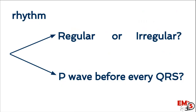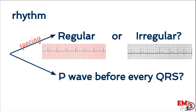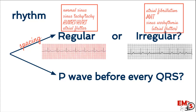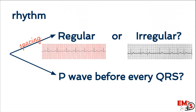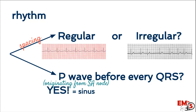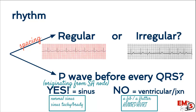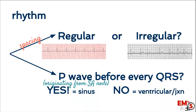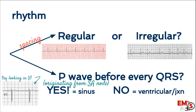Next, we're going to look at rhythm. There are two things to assess. First, ask yourself: is the spacing between the beats regular or irregular? This helps determine differentials. Second, ask: is there a P wave before every QRS and a QRS after every P wave? If yes, this is a sinus rhythm originating from the SA node. If no, it's originating from somewhere else — the ventricle or a junctional rhythm. If you have trouble finding the P wave, try looking in V1, where P waves have a biphasic quality and can be easier to find.